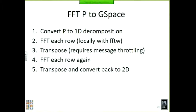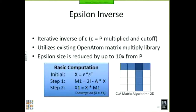The later steps: FFTing P to G-space is fairly straightforward — we convert the P matrix to a 1D decomposition so each row is local, FFT it using the FFTW library, transpose it while being careful not to flood the messaging layer with too many messages, FFT each row again, then transpose and convert back to the 2D decomposition for the next phase, which is the epsilon inverse.